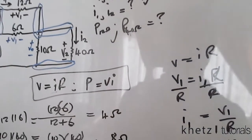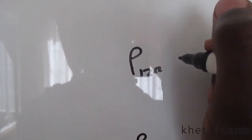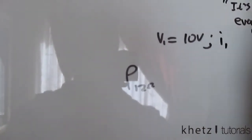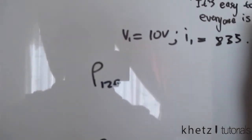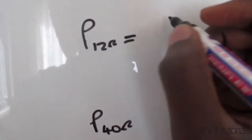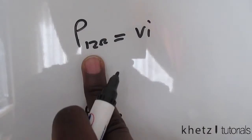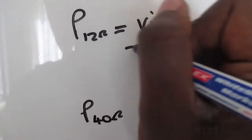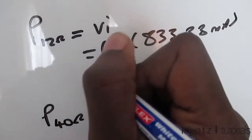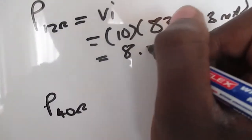The third part of the question asks for the power dissipated in the 12 ohm and 40 ohm resistors. The 12 ohm is associated with v1 equals 10 volts and i1 equals 833.33 milliamperes. Since power equals vi, we plug in those values and get 8.33 watts.